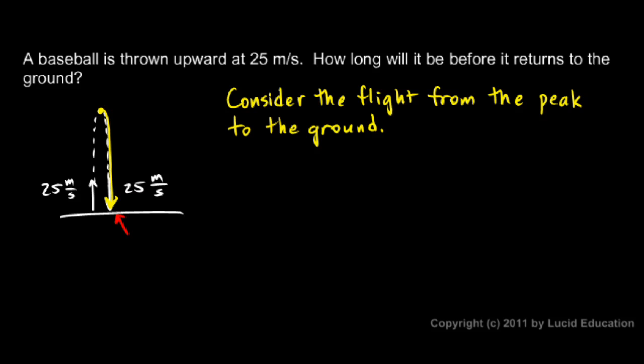So the initial velocity, I'll say vi, is equal to 0, and the final velocity down here, vf, is 25 meters per second.